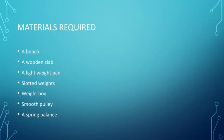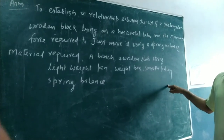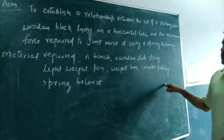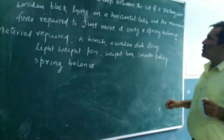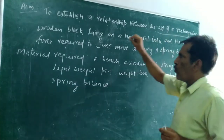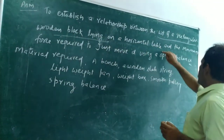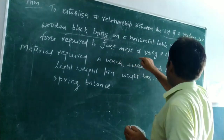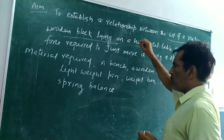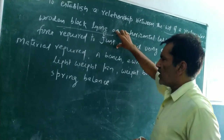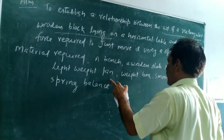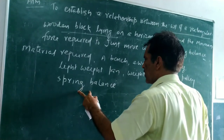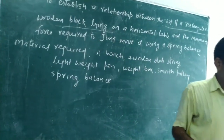These are the materials required. The aim of today's practical is to explain the relation between the weight of a rectangular wooden block lying on a horizontal table and the minimum force required to just move it using a spring balance. For doing this practical, we require certain materials: a wooden slab, a spring, a lightweight pan, a weight box, a smooth pulley, and a spring balance.